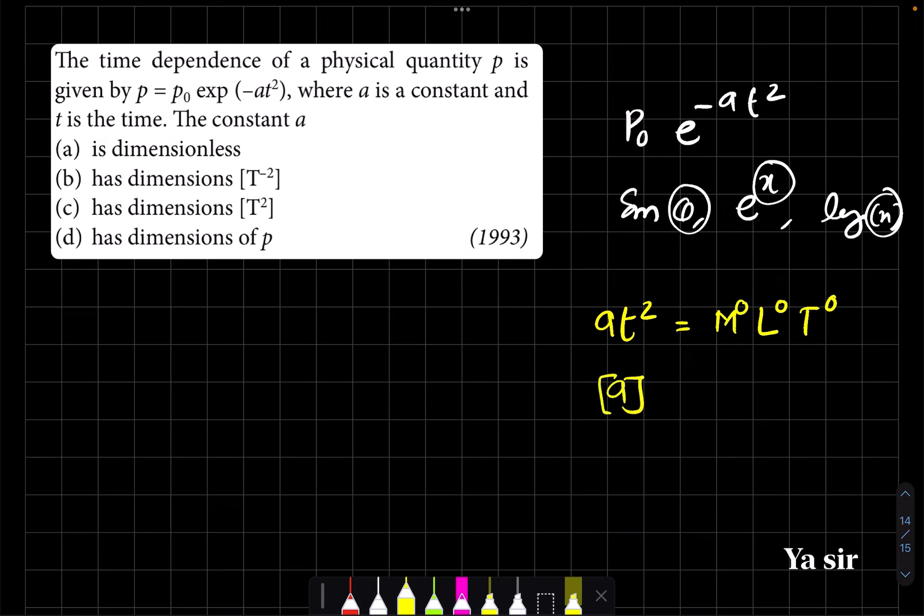So what is the dimensional formula of a? This is 1 by t squared, that is t to the power minus 2.